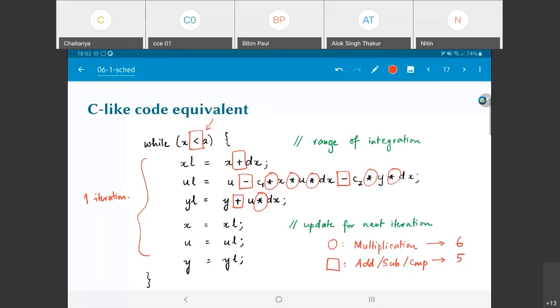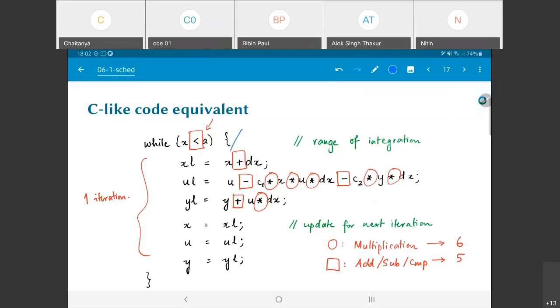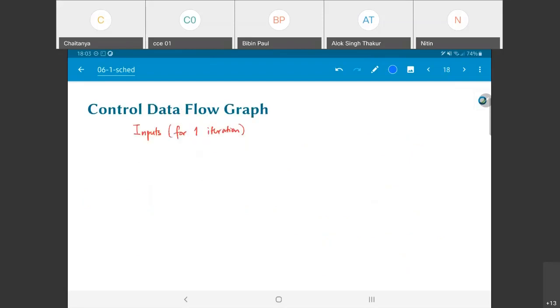If I say that this is one iteration, what are all the inputs that I have for one iteration? I basically have all of these values: I have x, I have dx, the present value of u, c1, the present value of y, and c2. All of these are essentially my inputs to the system. There is x, u, dx, y, c1, and c2. All of these need to be given as inputs to that while loop in order to compute one iteration.